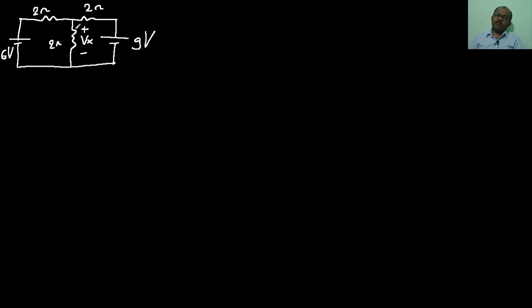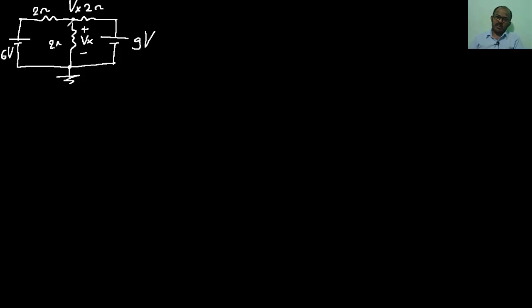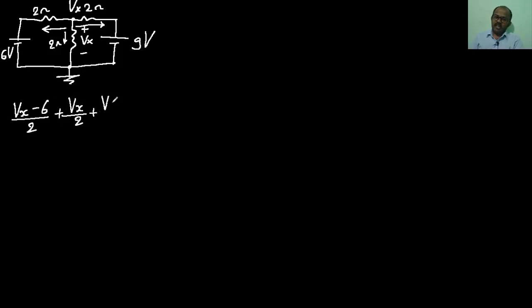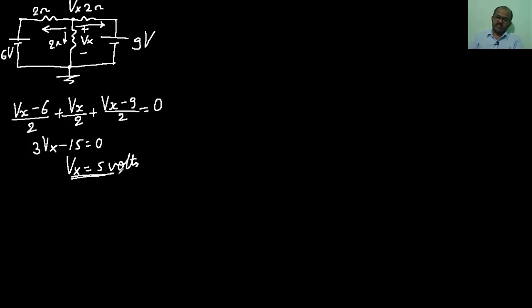In this problem, we have to find the voltage drop across the 2-ohm resistor, called Vx. This node voltage is also Vx, assuming the principal node as ground. To determine Vx, I'll use nodal analysis, assuming all currents are leaving. Applying nodal analysis: (Vx − 6)/2 + Vx/2 + (Vx − 9)/2 = 0. This gives 3·Vx − 15 = 0, so Vx = 5 volts.